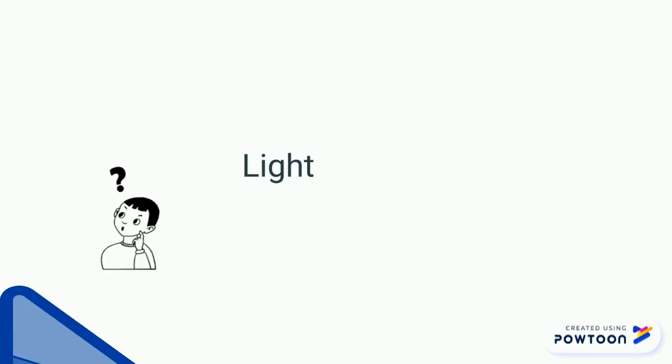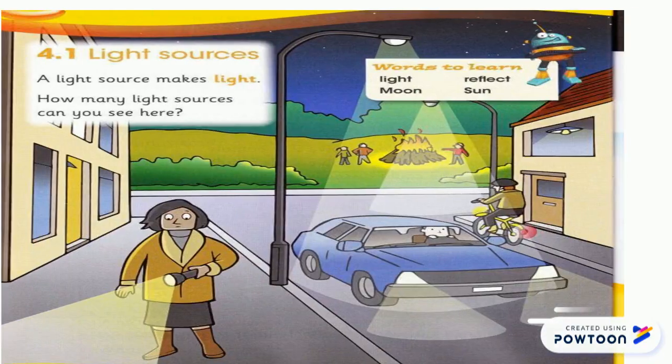Look at this picture. How many light sources can you see here? What's the meaning of light source? The light source makes the light. I can see here the torch, the car headlights, the bike, street lamps, the campfire, and the lamp inside the building. They are called sources of light.